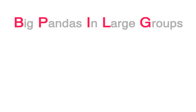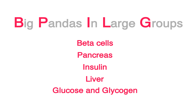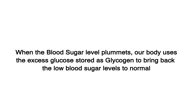If this process is too much to remember, try memorizing this: Big pandas in large groups. B is for beta cells, P for pancreas, I for insulin, L for liver, G for glucose and glycogen. Simple, isn't it? Now, what if our blood sugar levels plummeted? That's when our body uses the glucose which is stored in the form of glycogen in our liver.